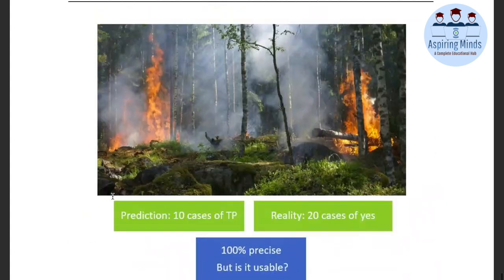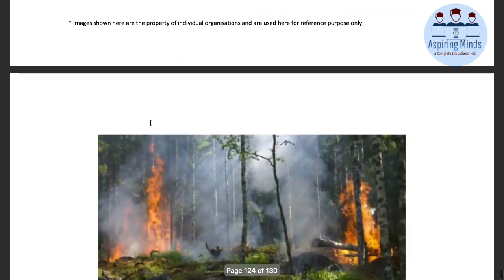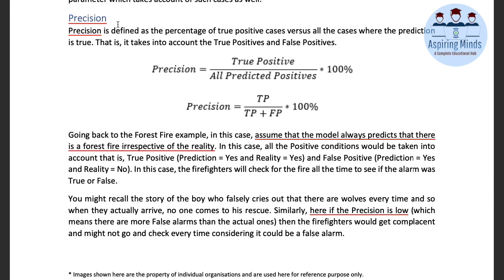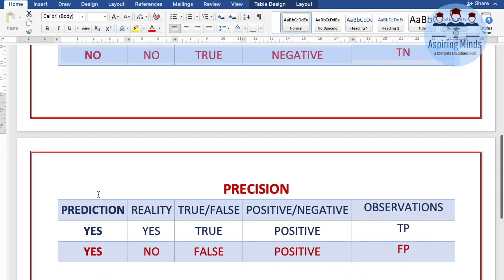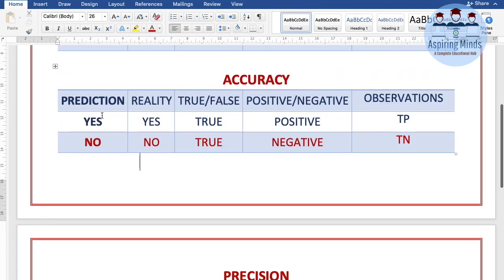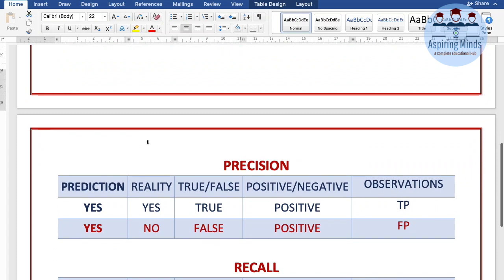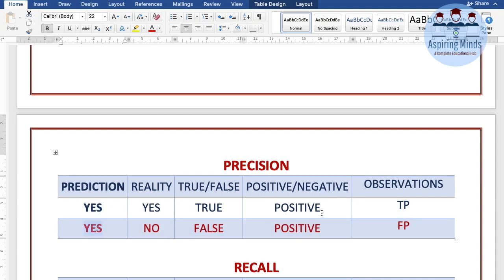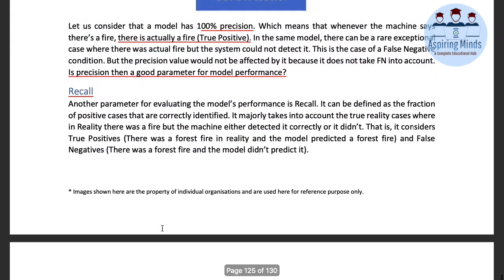In summary: accuracy takes true cases where prediction and reality match; precision takes positive predicted cases — where prediction is yes — regardless of whether it matches reality or not. I hope you will revise this. The next recall model we will cover in the next class. Till that time, stay tuned and thank you very much. Take care, bye bye.